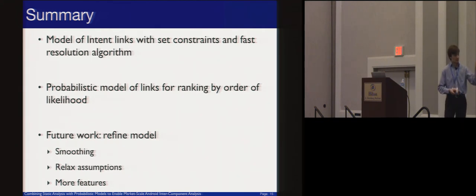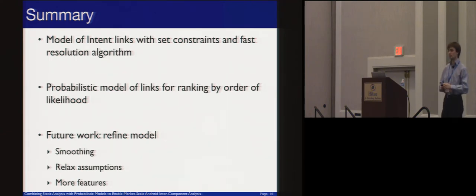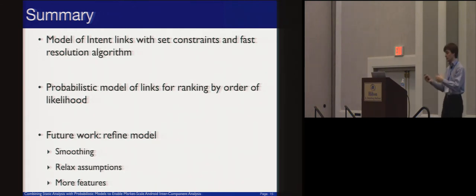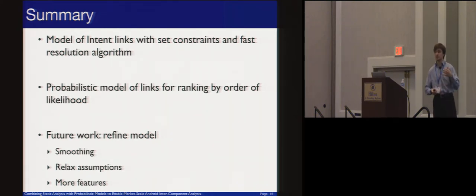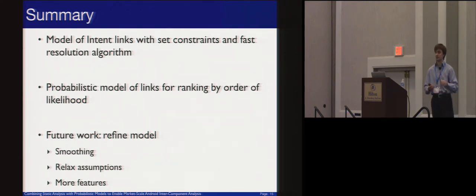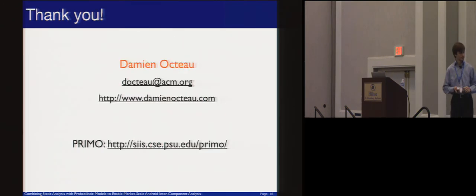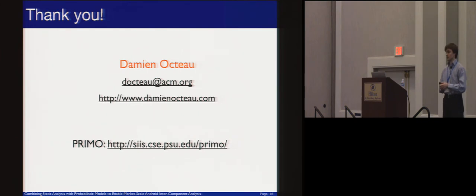In summary, we developed a model of intent links using set constraints, and using this formalism we devised a fast resolution algorithm. We also came up with a probabilistic model of links useful for ranking the probability values from static analysis. In future work, we could use smoothing to better handle unseen data, relax some assumptions to gain precision, and add more features beyond intent and intent filter fields. Our implementation is available online and open source — please try it out and give us feedback.